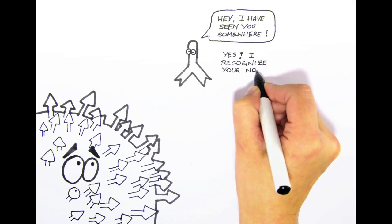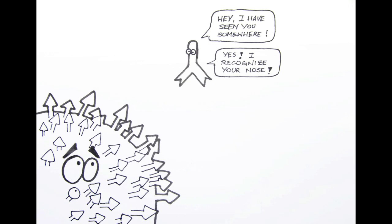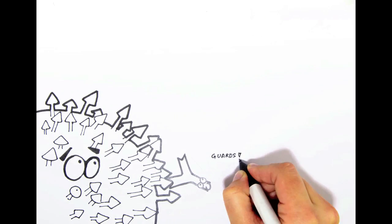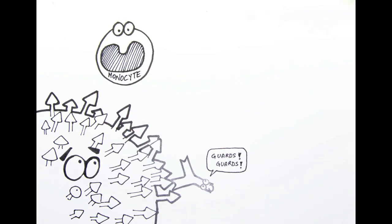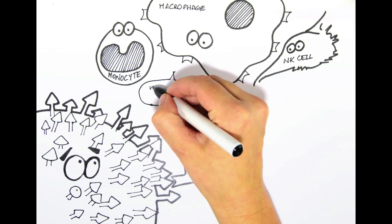They work by recognizing one particular region of their target called an antigen. Once they bind to the antigen, they recruit special cells which are part of the immune system who take care of eliminating the enemy.